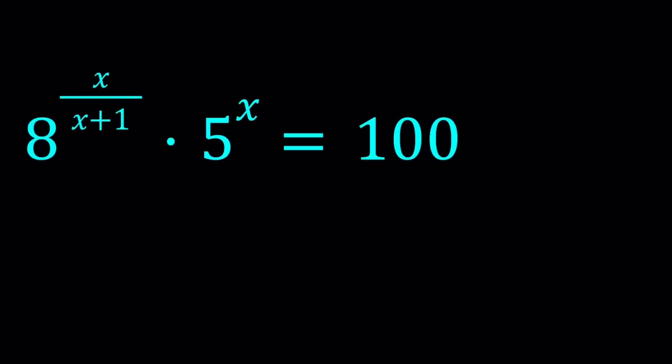I'll be presenting two methods. Let's start with the first one. My first method is going to be a little painful, but it's important because solutions are not always nice — this is more of a general method that can be applied to pretty much any situation. Change the 8 and 5 and this method will still work. You could also guess at this point what a possible solution might look like, but I'm going to skip that part until we get to the solutions.